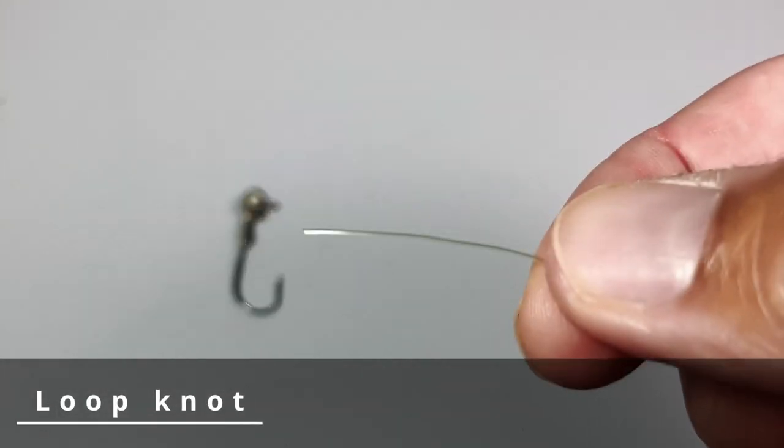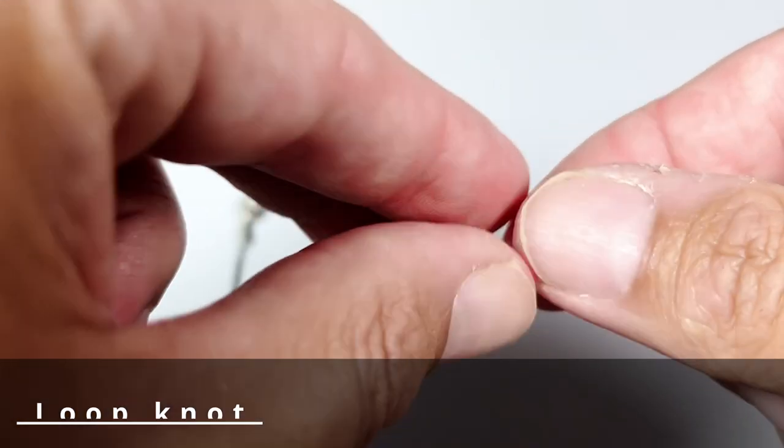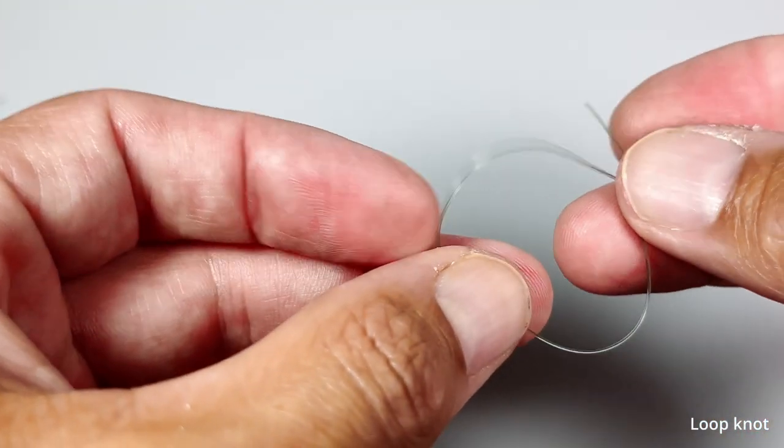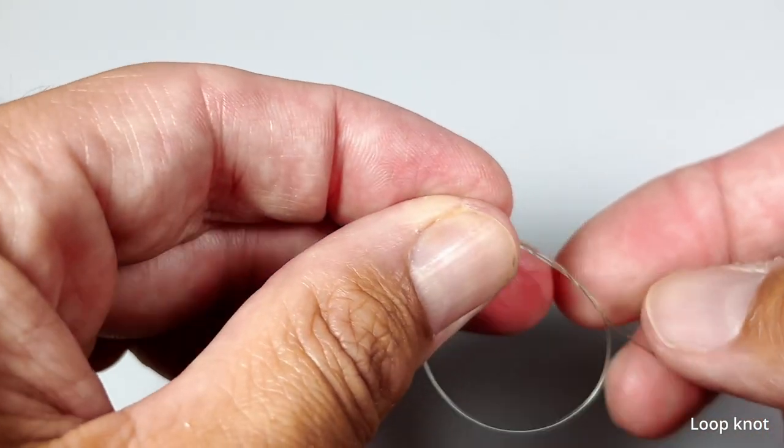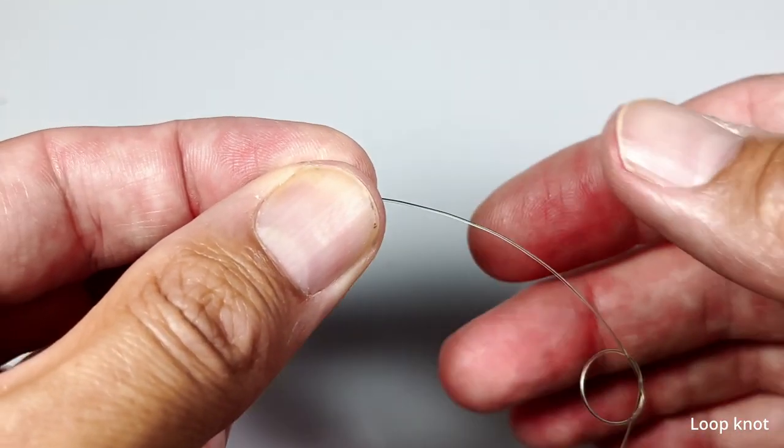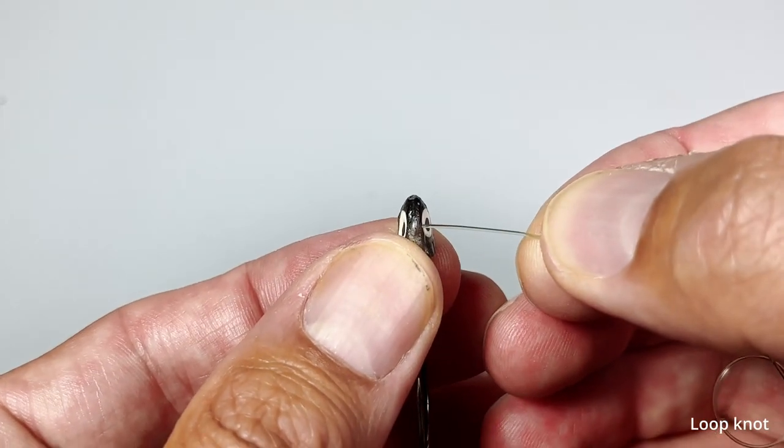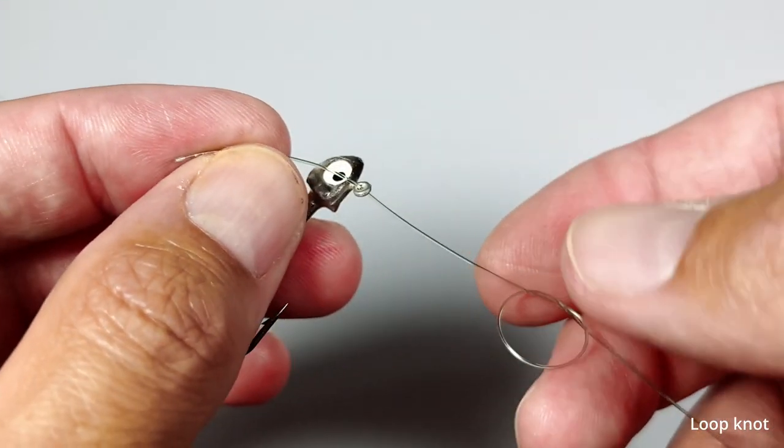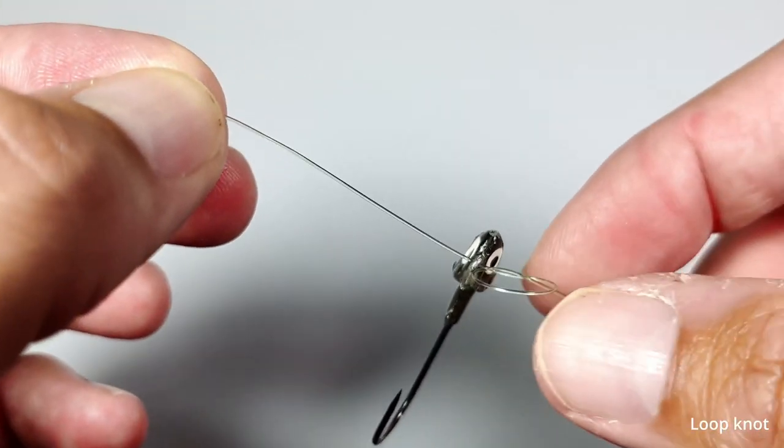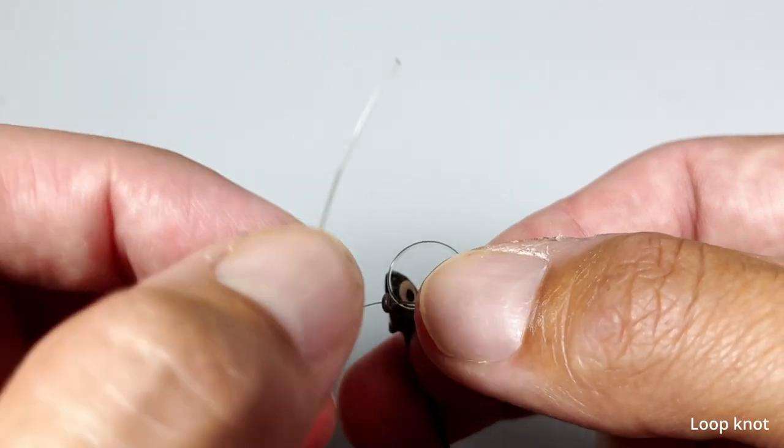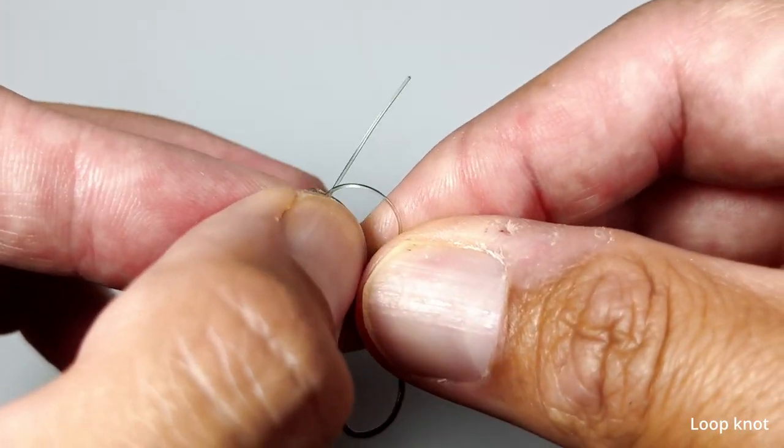The final knot is a loop knot. You take the tag end and you perform an overhand knot. Then you take the tag end and slide it through the eye of the jig head. Move the jig all the way to the loop. Next you take the tag end and move it up through the loop.